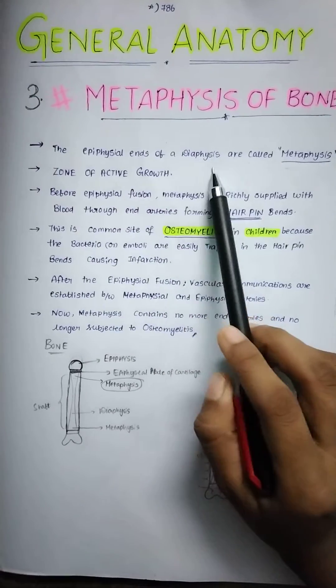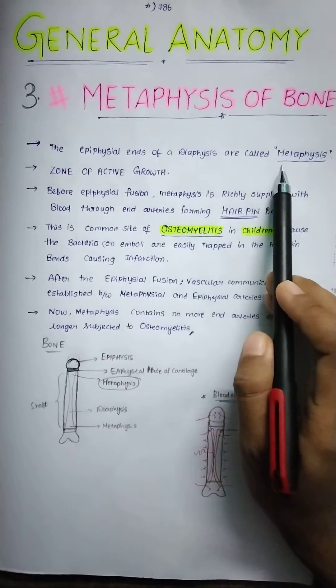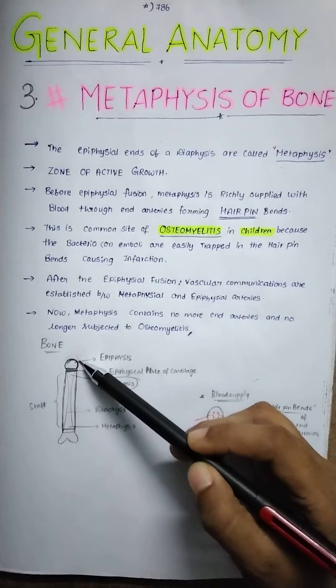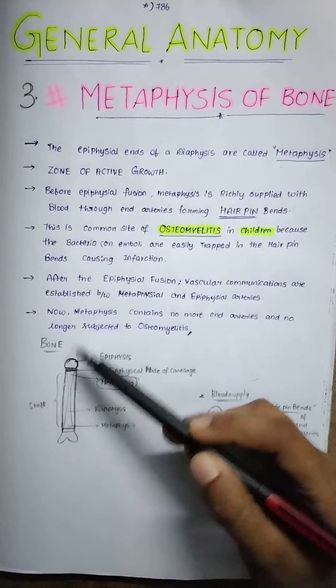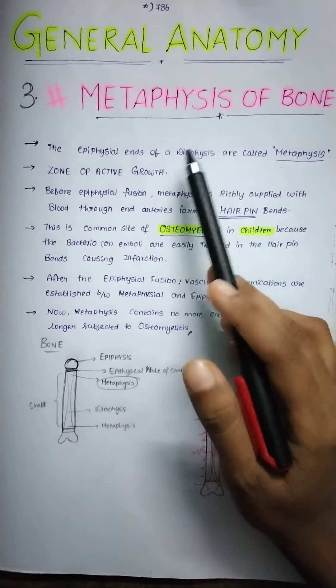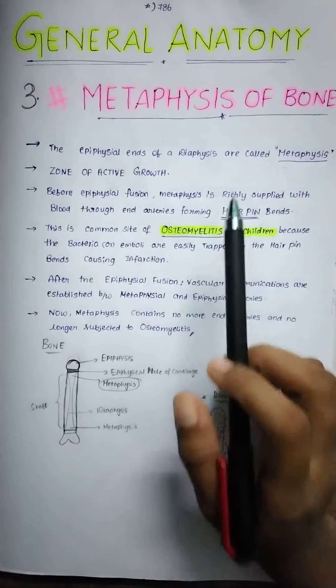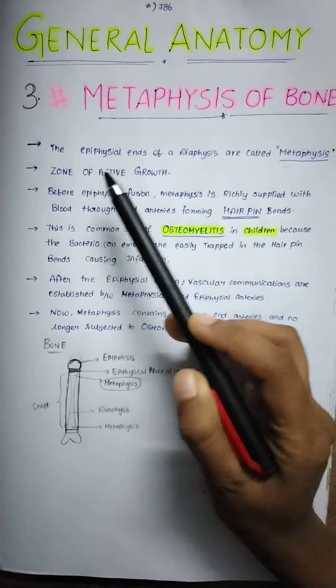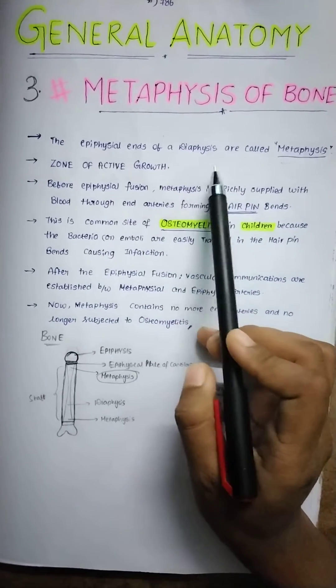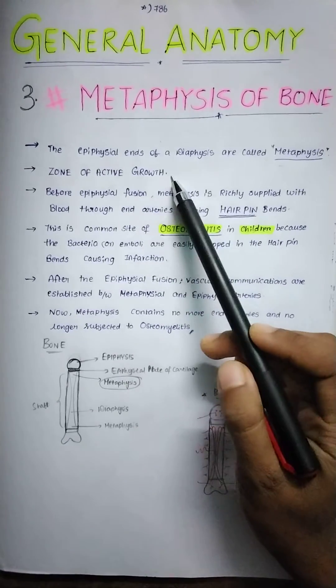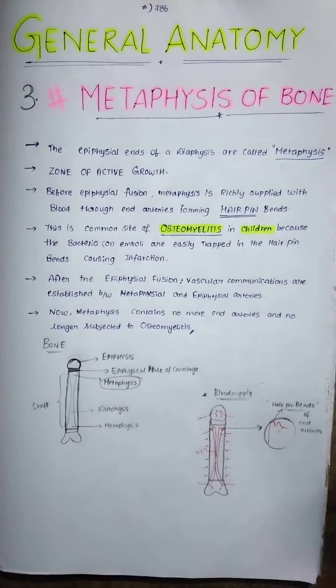The epiphysial ends of a diaphysis are called metaphysis. Okay, the epiphysial ends - these are the ends of the diaphysis. They belong to the diaphysis but are the ends near the epiphysis. Understand this point: the epiphysial ends of the diaphysis are called metaphysis, and this is the zone of active growth in a young growing bone.